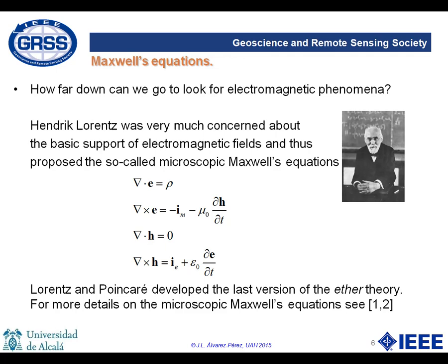Maxwell's equations were written in the original work of the Scottish scientist in terms of quaternions, a mathematical language not very common nowadays in the applied sciences. The current vector notation is due to Heaviside. However, the story should start with a microscopic version of Maxwell's equations if we want to start from the very bottom. These microscopic Maxwell's equations were derived after Maxwell by the Dutch physicist Heinrich Lorentz, conceived as describing electromagnetic waves in the vacuum — or ether, as it was thought at the time.